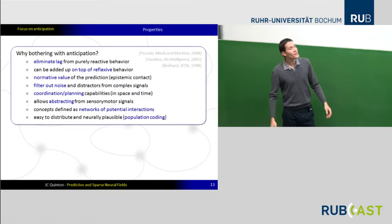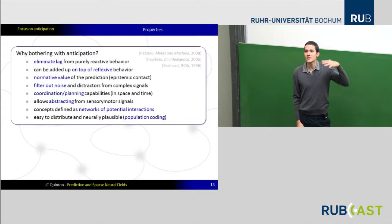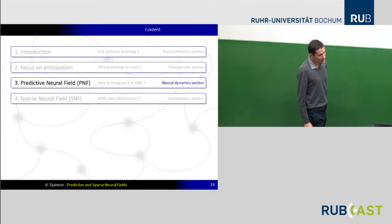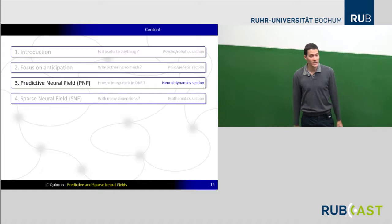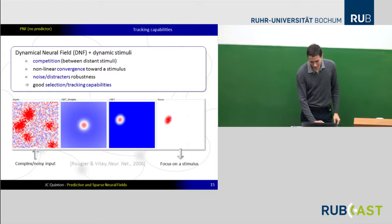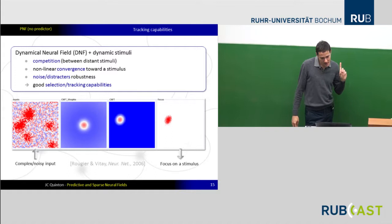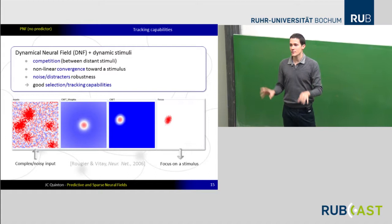Switching to the third part: going deep into the neural dynamics and how to embed prediction in it. From what we've seen in the courses this week, if you have static input, you've seen how to make decision selection and similar things. But if you have moving stuff, let me go directly to simulation.